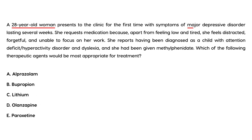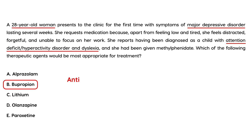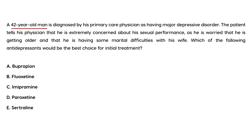Second vignette: a 28-year-old woman presents to the clinic for the first time with symptoms of major depressive disorder lasting several weeks. She requests medication because, apart from feeling low and tired, she feels distracted, forgetful, and unable to focus on her work. She reports having been diagnosed as a child with ADHD and dyslexia, and had been given methylphenidate. Which therapeutic agent would be most appropriate? Bupropion is an antidepressant but is also used in the treatment of ADHD, so it's the most appropriate choice to address both conditions.